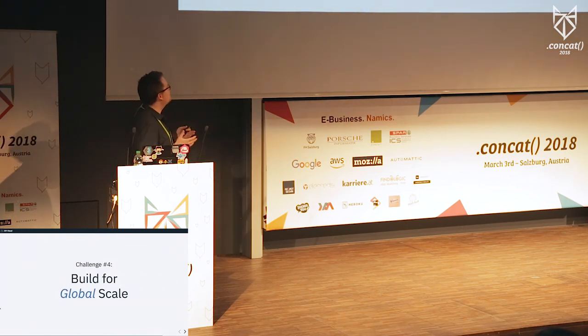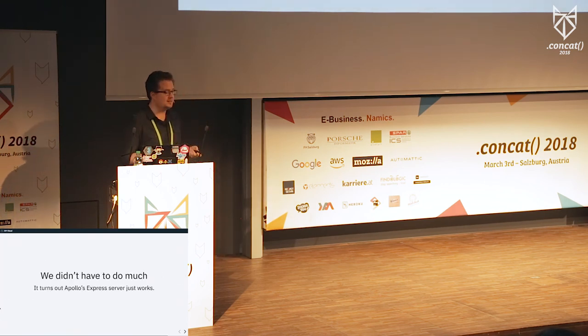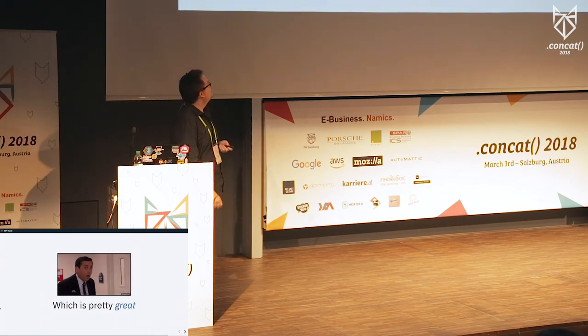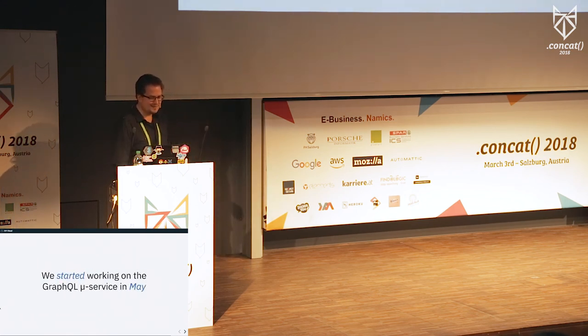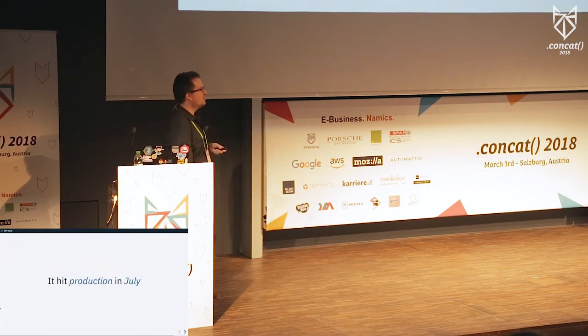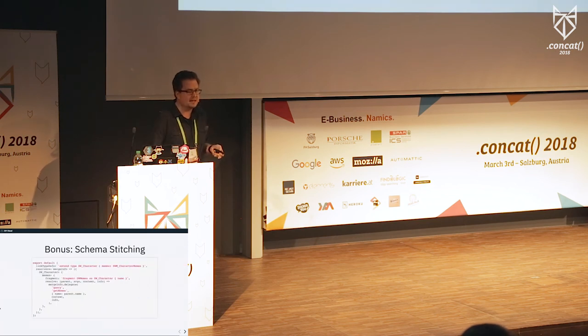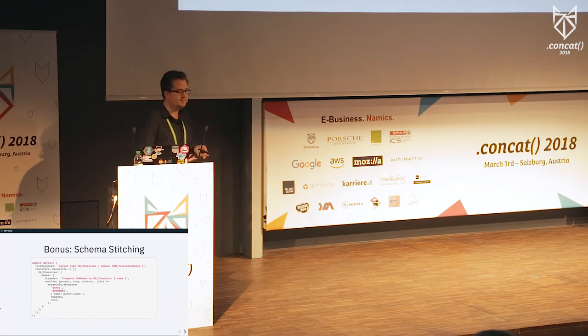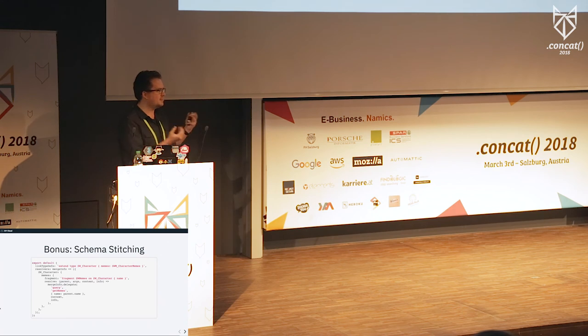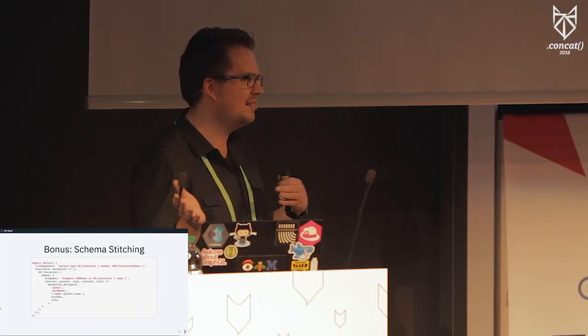The fourth challenge was how do we build for global scale? And we actually didn't have to do much — Apollo's Express server just kind of worked. We started working on the GraphQL microservice back in May, it hit production in July, and then we went open source with GrAMPS back in October. One of the cool bonuses was that schema stitching ended up being really easy with GrAMPS — it's just a way to take a GraphQL schema and extend it by adding your own fields to that data, so you don't have to do any complicated merging on the front end. So: it's GrAMPS — definitely get involved, make data sources, submit pull requests, we're always looking for more help. Thank you so much, and I hope you enjoy the rest of the conference.